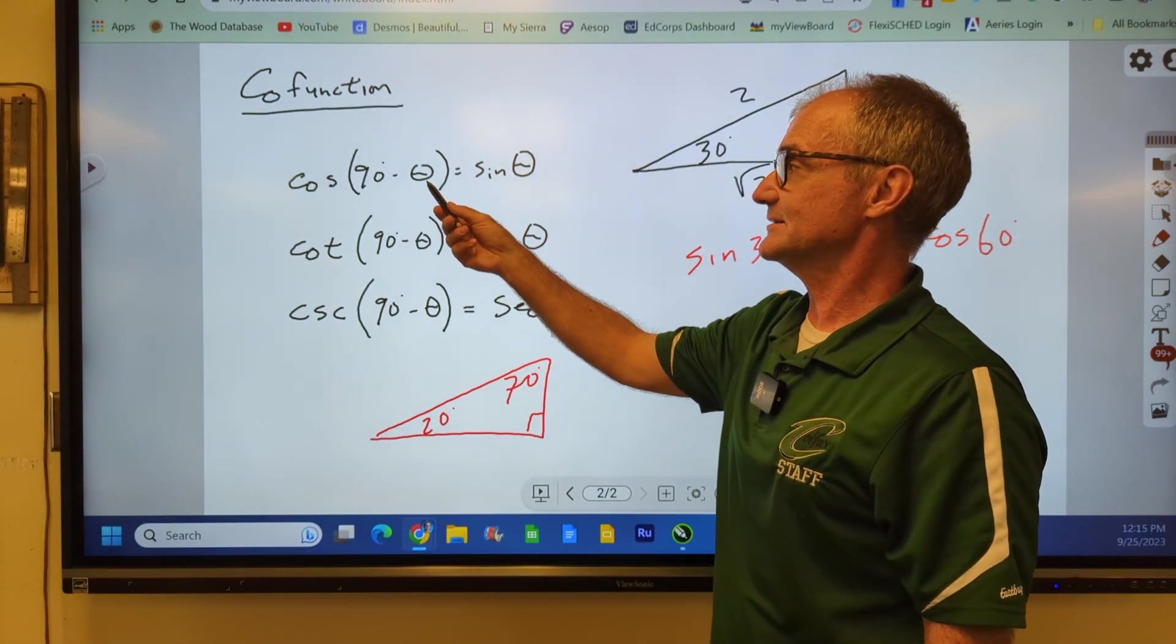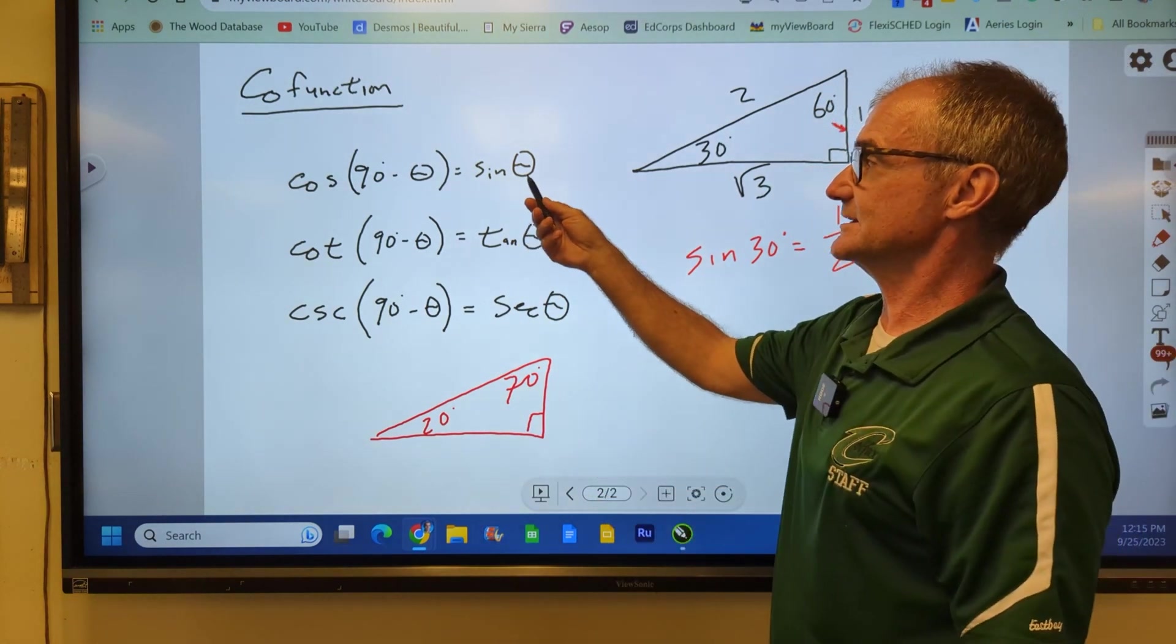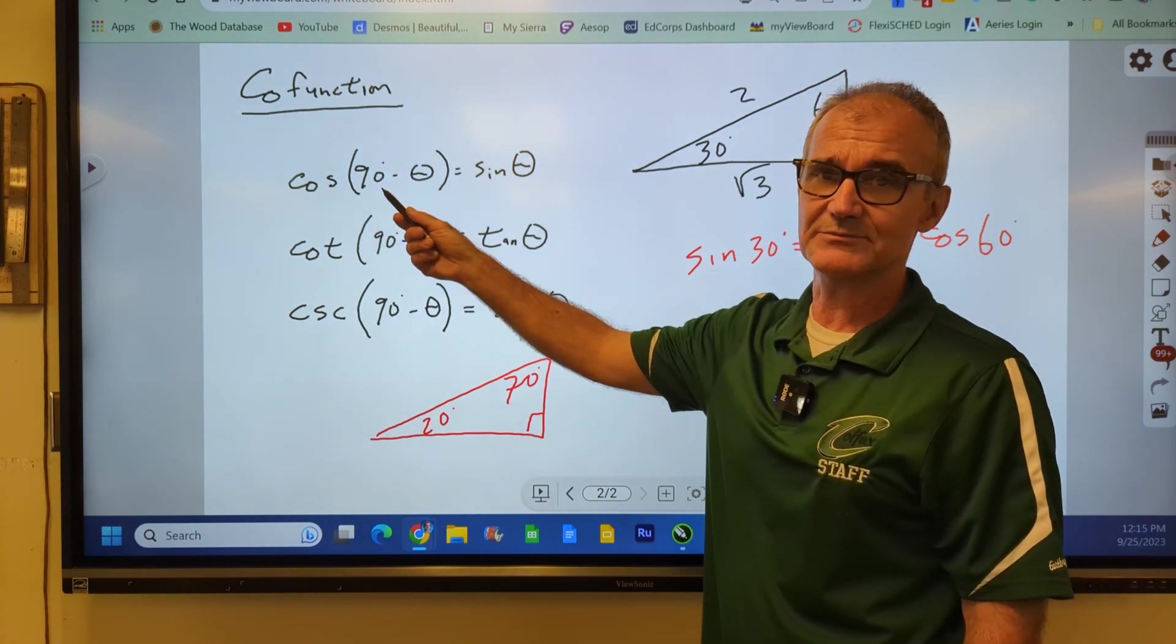Cosine of 90 minus theta is equal to sine of theta. And the converse is true as well. Cosine of theta would be equal to sine of the complement.